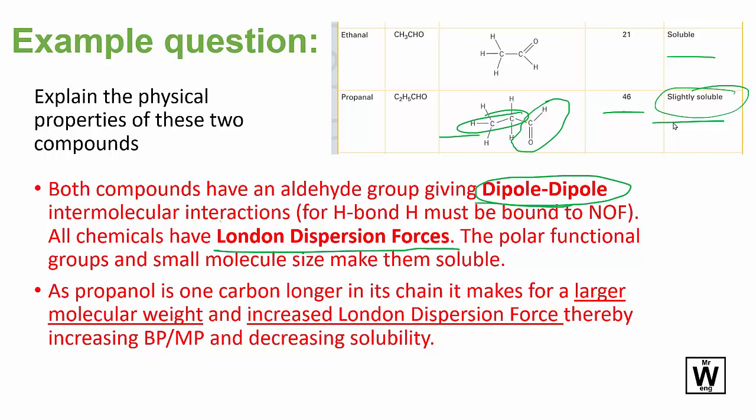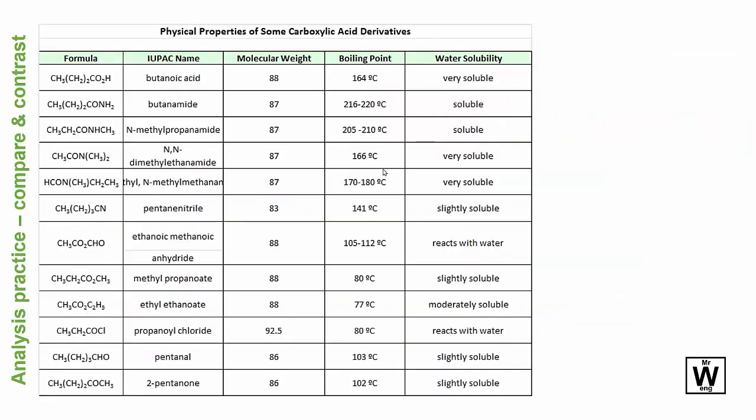For solubility, the same reasoning applies — the longer chain means propanal won't be as soluble as ethanol, because the dispersion forces will not interact as well with the hydrogen bonding of water. There's also a slide here for further analysis: many of these compounds have similar molecular weights, so focus on the functional groups, the type of intermolecular forces, and note any steric hindrance — for example, if the functional group is surrounded by methyl groups, making it less effective.